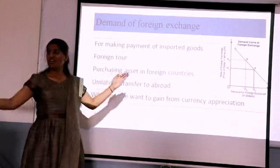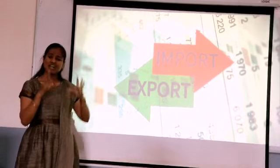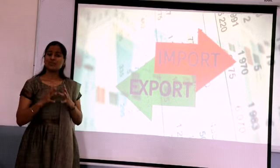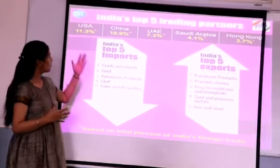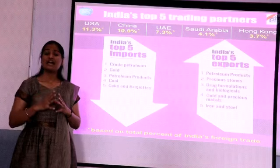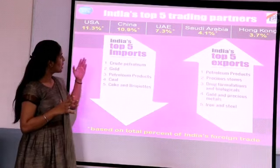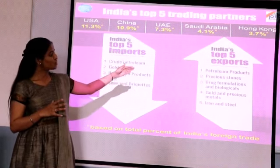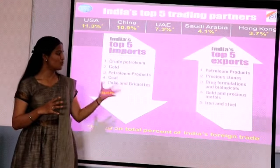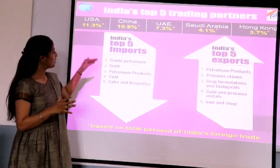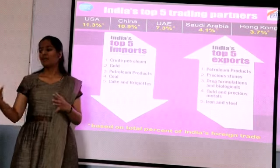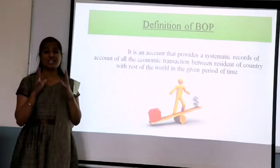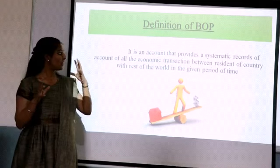Now we need to understand import and export. All transactions done fall into two categories: import and export. As far as India's top five trading partners are concerned, India is also among the top five exporting partners. India's top exports include petroleum products, precious stones, drugs, gold, and many more. Similarly, India's top imports include crude petroleum, gold, petroleum products, and many more. Let us now move forward to our main concept — BOP.